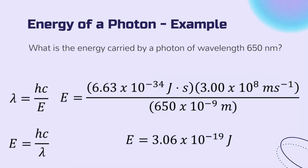What is the energy carried by a photon of wavelength 650 nanometers? We can rearrange that formula so that it's E equals hc over lambda. We plug in two constants in the numerator — Planck's constant and the speed of light in vacuum — divide by the wavelength of the light in meters, and we get an energy for this photon of 3.06 times 10 to the negative 19 joules.